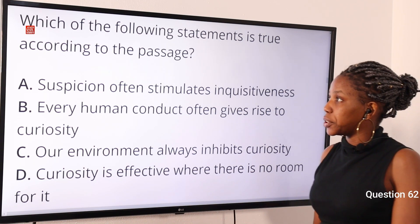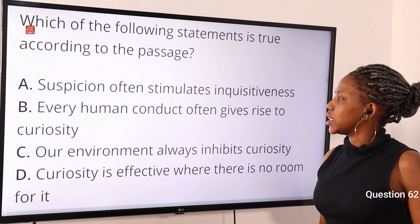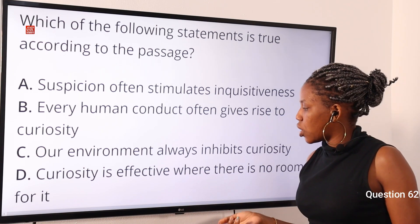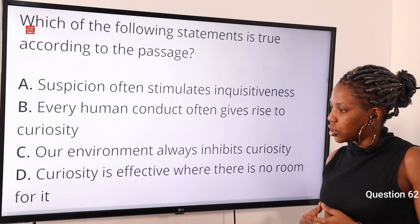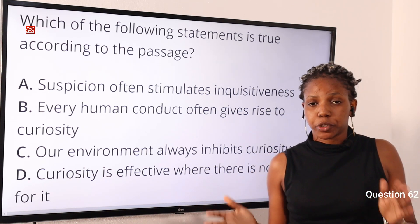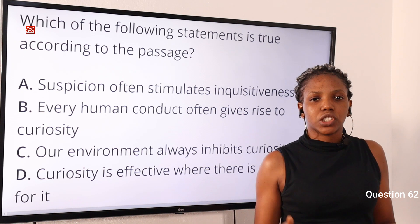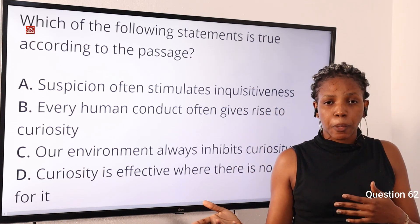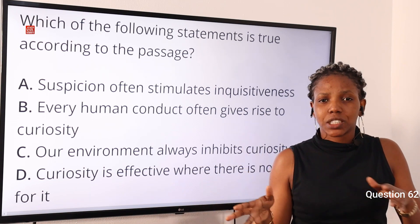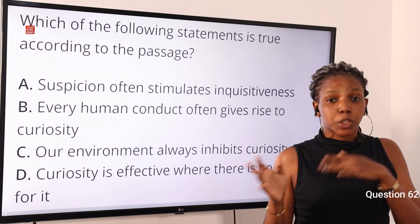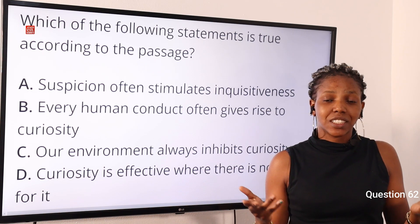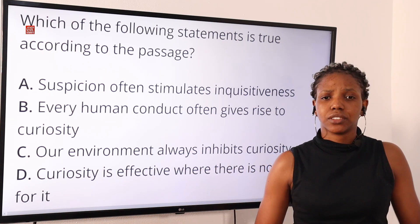Question 62: Which of the following statements is true according to the passage? Option A: suspicion often stimulates inquisitiveness. Option B: every human conduct often gives rise to curiosity. Option C: our environment always inhibits curiosity. Option D: curiosity is effective when there is no room for it. The answer is option A, because inquisitiveness and curiosity are used interchangeably, and the passage states it is stimulated by suspicion or the hint that discussions directly or indirectly concern us.